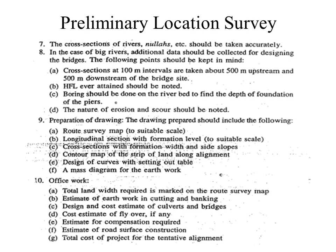The drawings prepared should include: a route survey map to suitable scale; the longitudinal section with formation level; cross sections with formation width and side slopes; a contour map of the strip of land along the alignment; the design of curves with setting-out tables; and a mass diagram for earthwork. Office work includes: marking the total land width required on the route survey map; estimating quantities of cutting and filling; design and cost estimate for culverts and bridges; cost estimates for compensation; estimate of road surface construction; and total cost of the project.